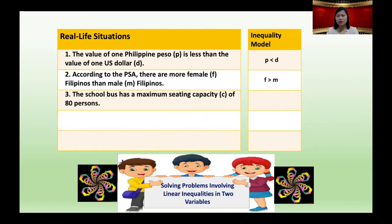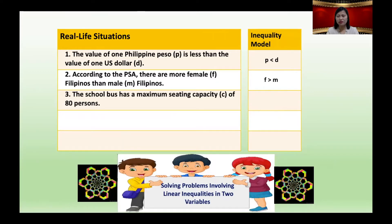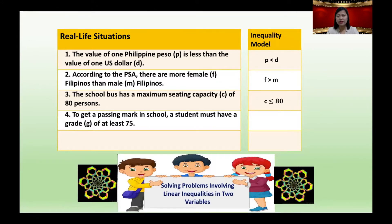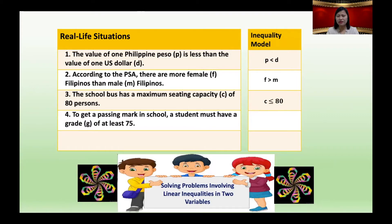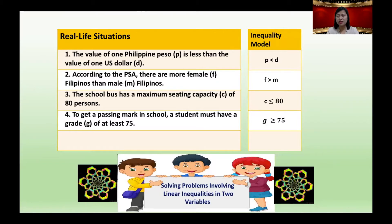Number three: the school bus has a maximum sitting capacity C of 80 persons. The inequality model: C is less than or equal to 80. Number four: to get a passing mark in school, the student must have a grade G of at least 75. The inequality model: G is greater than or equal to 75.